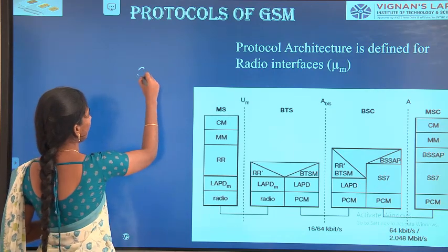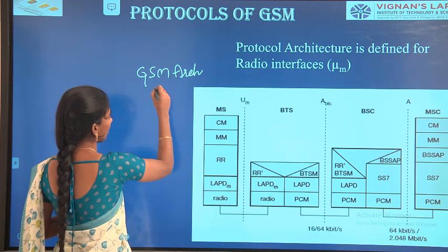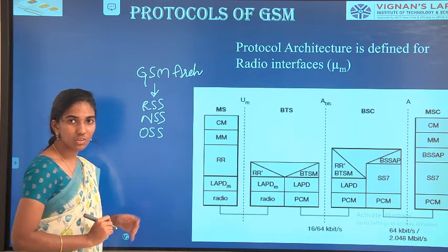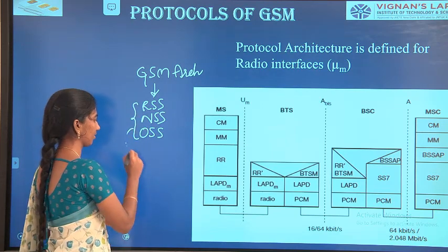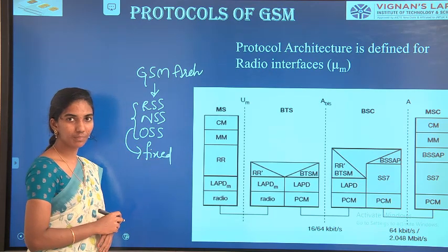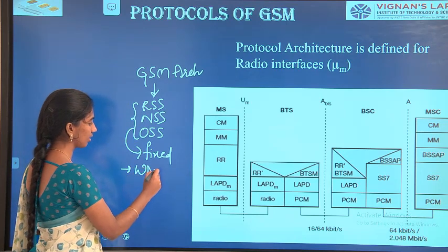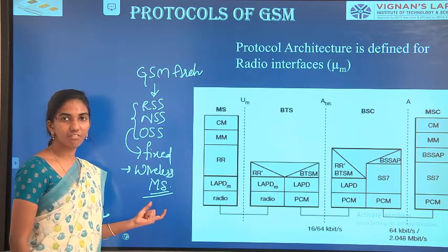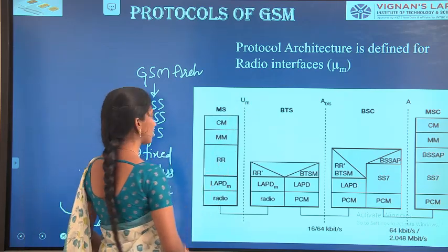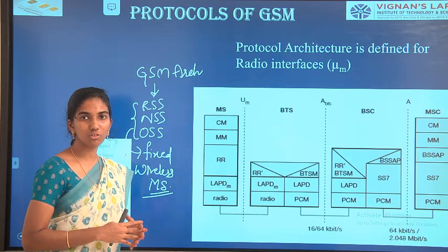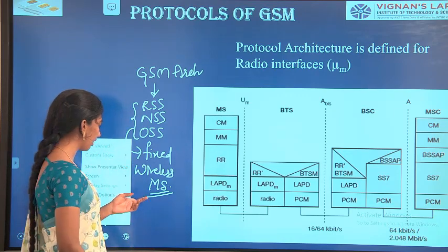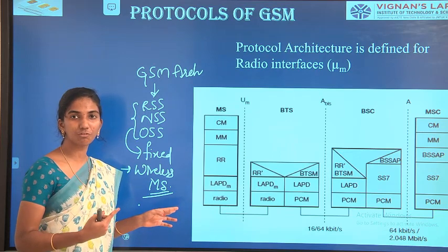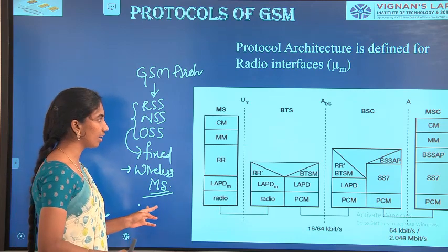As discussed previously, we have a GSM architecture with main components RSS, NSS, and OSS. The components in these three are fixed — they are not movable. The only wireless component is the mobile station. That is why we are concentrating on the UAM interface. In the previous session on radio interfaces, we also concentrated only on the UAM interface. Being a wireless network, we need to maintain certain standards and protocols for communicating data over the network.